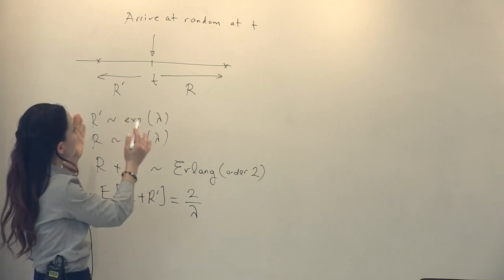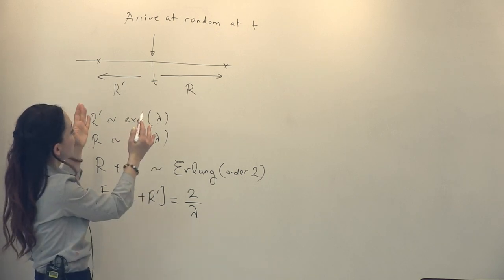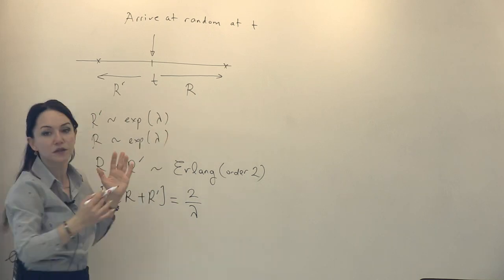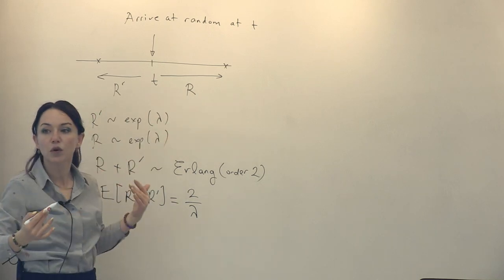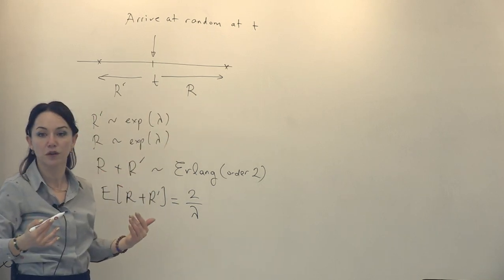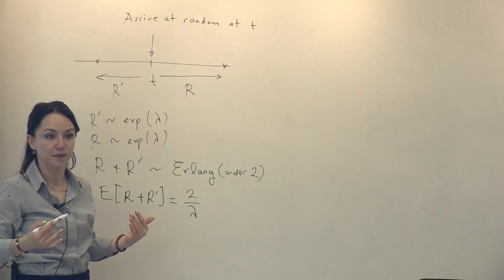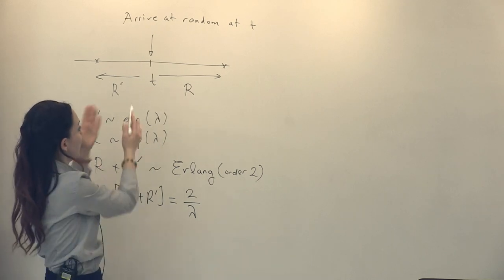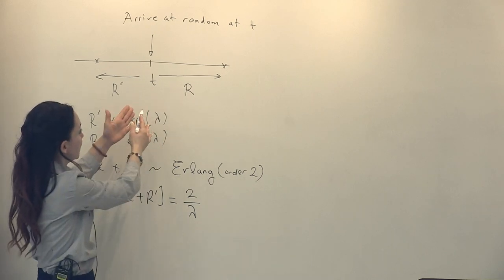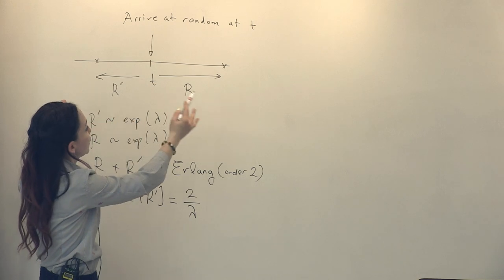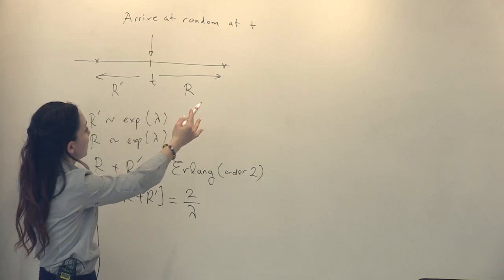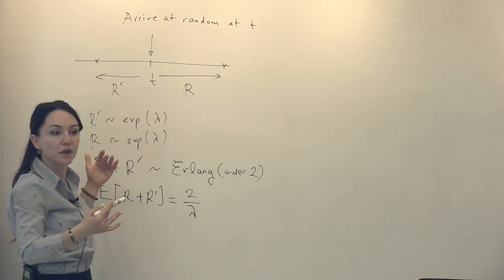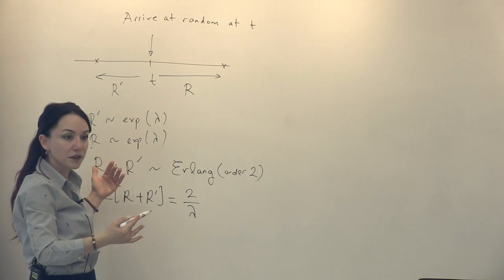So the total duration I'm sampling is r plus r', and we argued that this is not an exponential — this is an Erlang distributed random variable of order 2 with parameter λ. The expectation is equal to 2/λ. So random arrivals like this sample larger intervals. How is it possible that when I arrive at random, the mean interval I'm sampling is twice as long as the average inter-arrival interval?